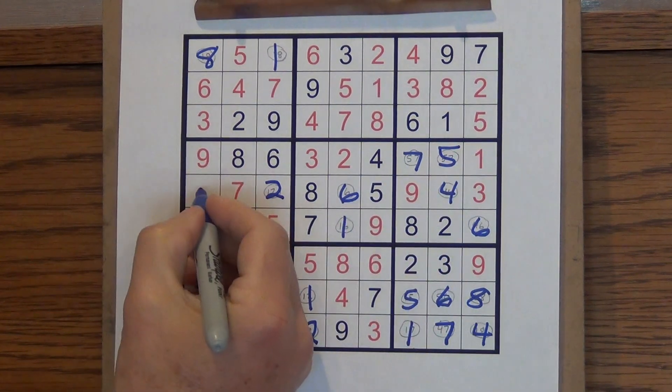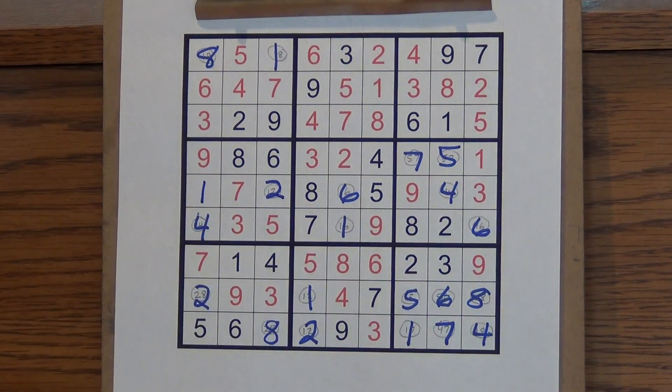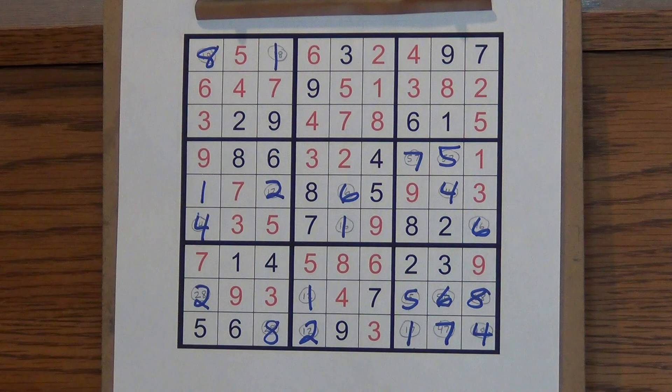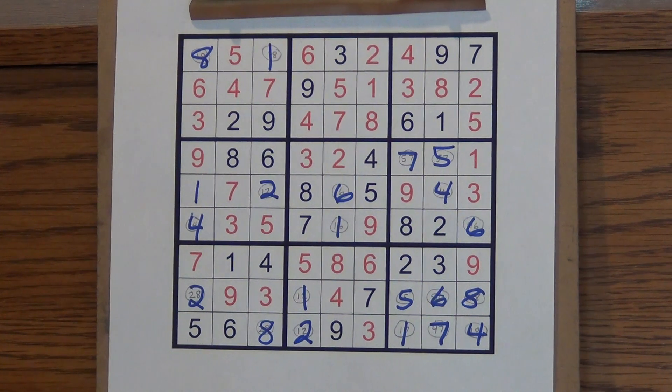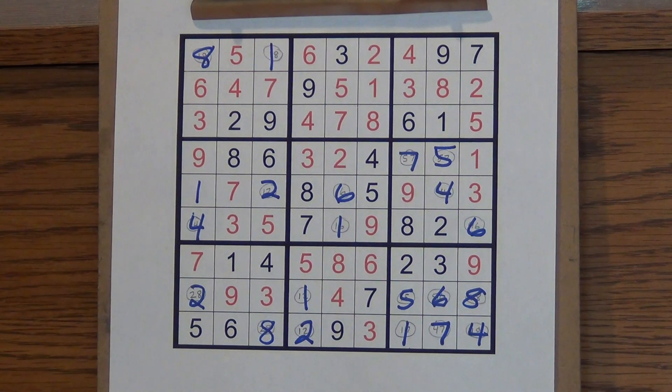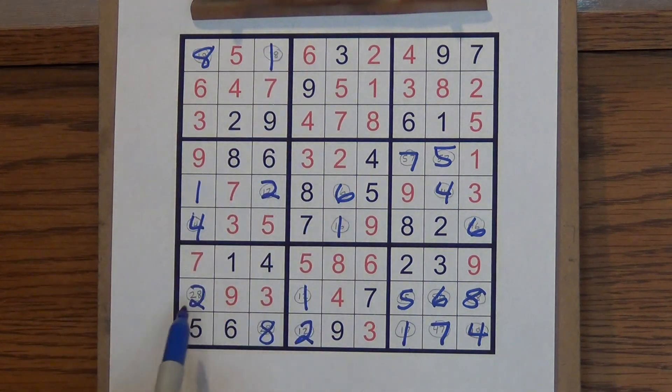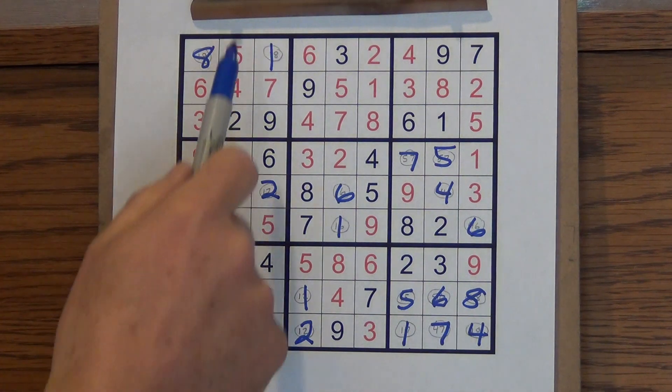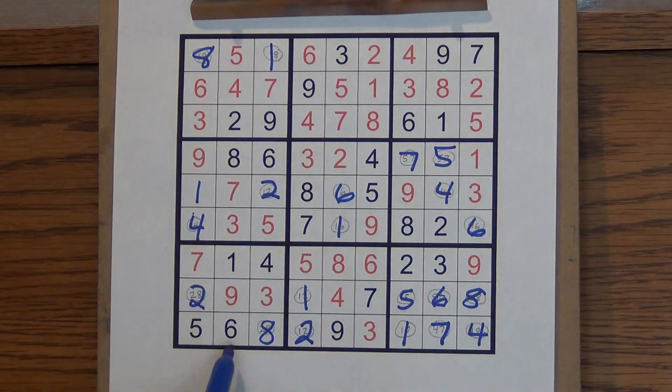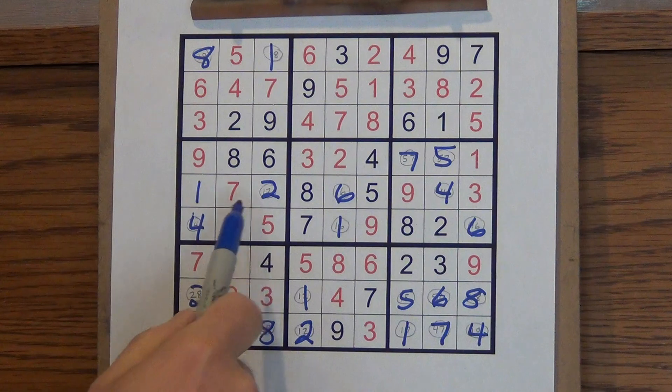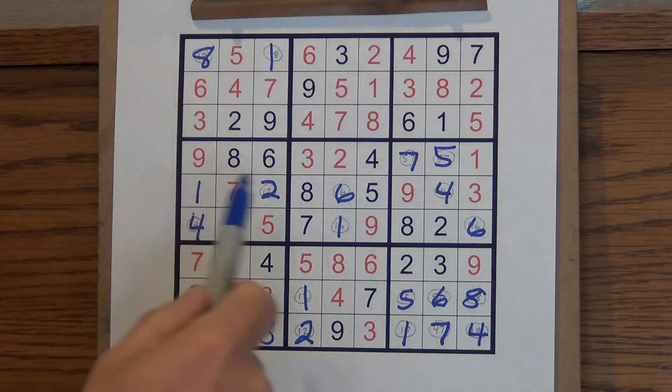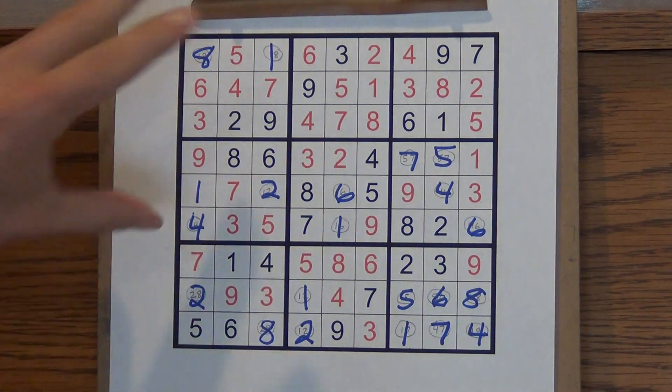But now in this case, I believe it checks out. So I'm going to make sure that there's a one through nine in every row, in every column, in every little box. One, two, three, four, five, six, seven, eight, nine. It checks out here.